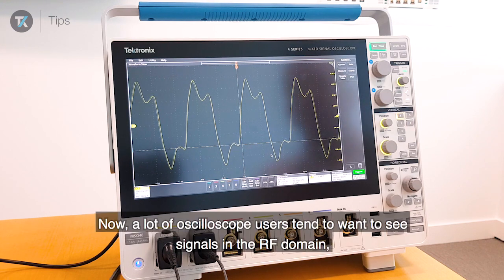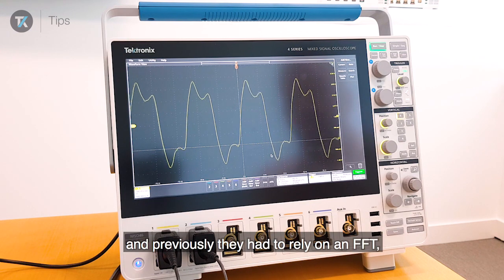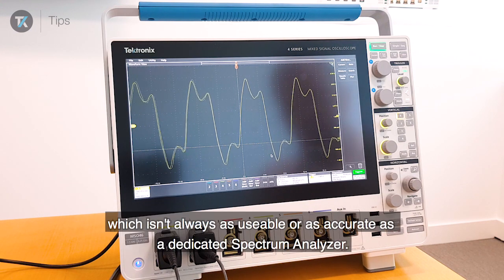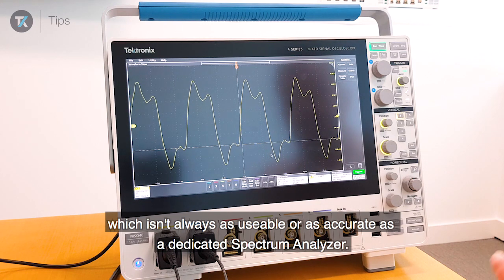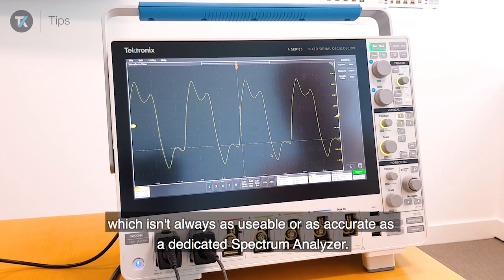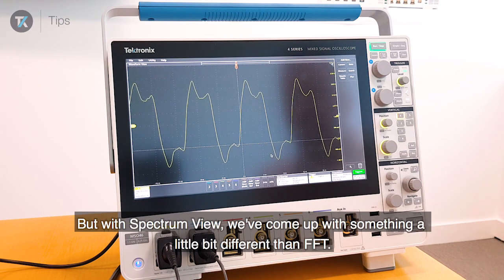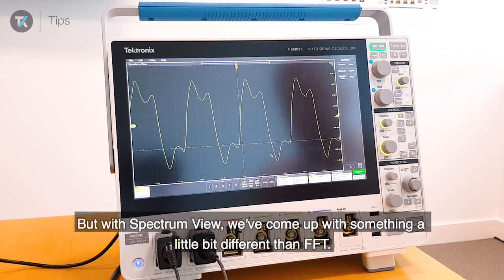A lot of oscilloscope users tend to sometimes want to see signals in the RF domain. Previously, they had to rely on an FFT, which isn't always as usable or as accurate as a dedicated spectrum analyzer. But with SpectrumView, we've come up with something a little bit different than FFT.